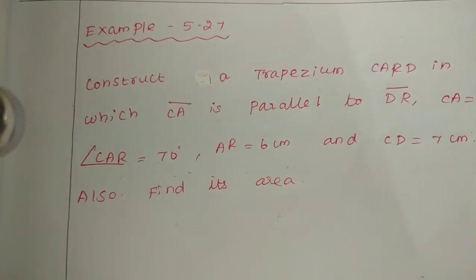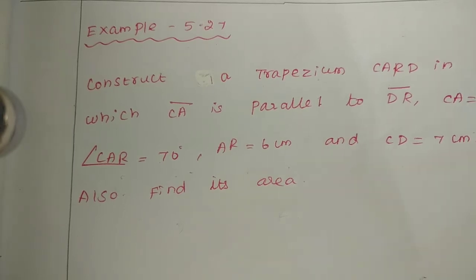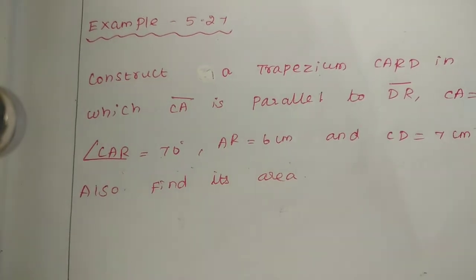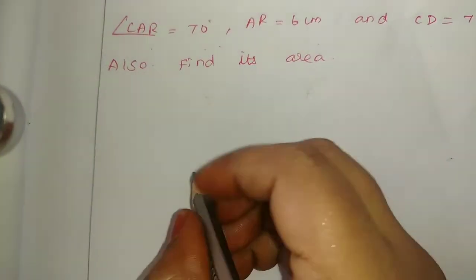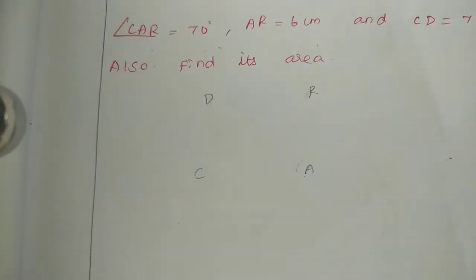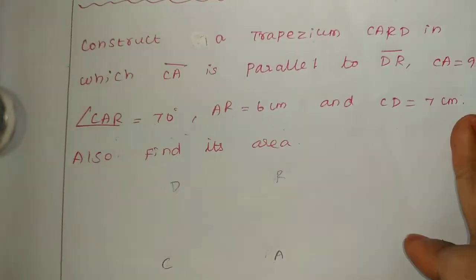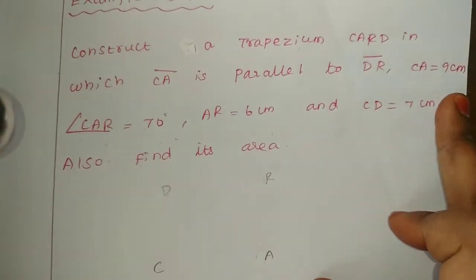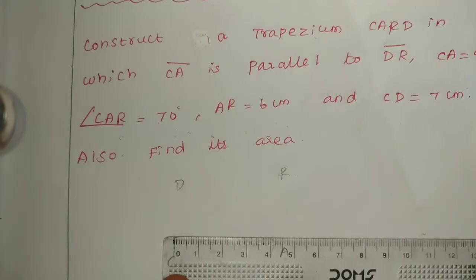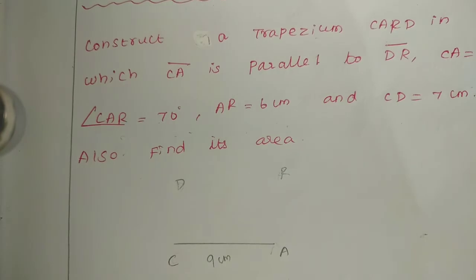So if you look at the values, we will get the rough diagram. The card is C, A, R, D. First value: CA. CA is 9 centimeter.